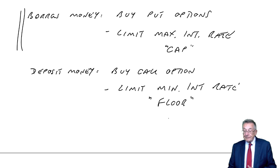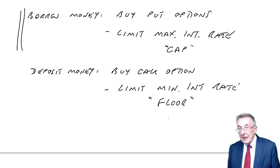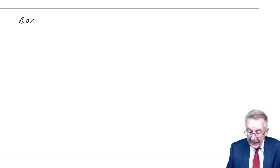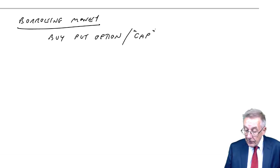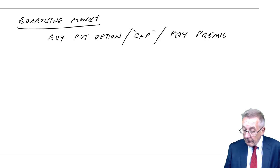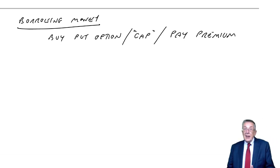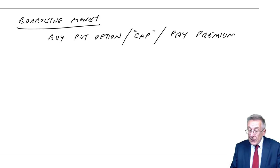Going back to a borrower: they're going to buy put options, and the downside is they'll have to pay a premium. But a way of reducing it is this. If we're borrowing money, we'll buy a put option — creating a cap, a maximum interest rate — but the downside is we pay a premium. You'll end up paying whatever the actual interest rate is, but you'll claim back from the dealer by buying and selling the futures once rates go above the limit.